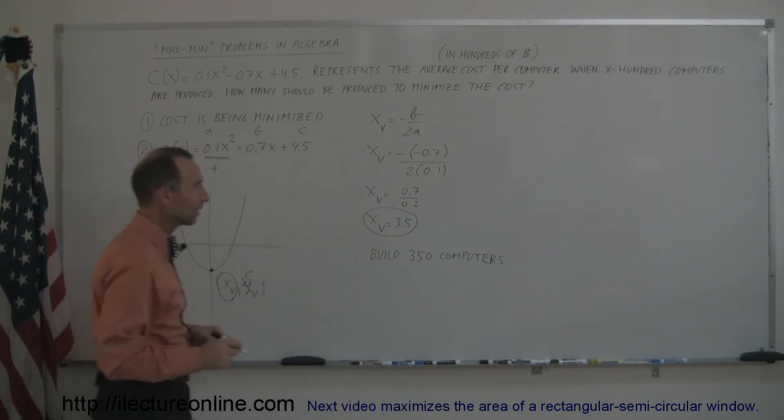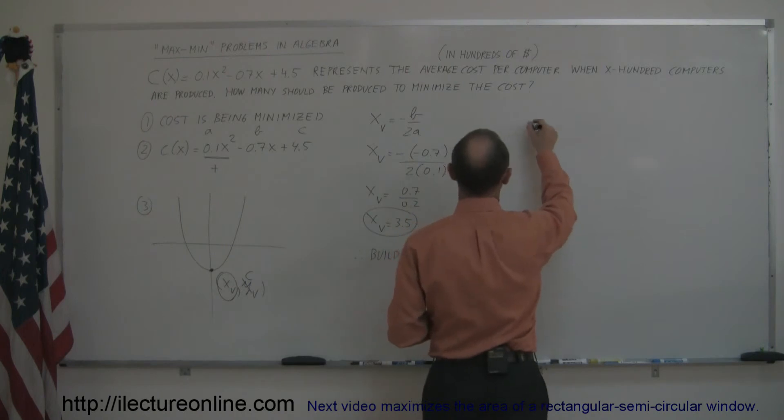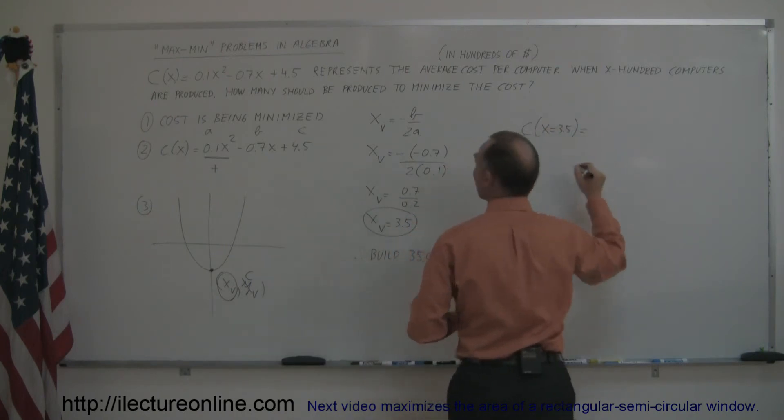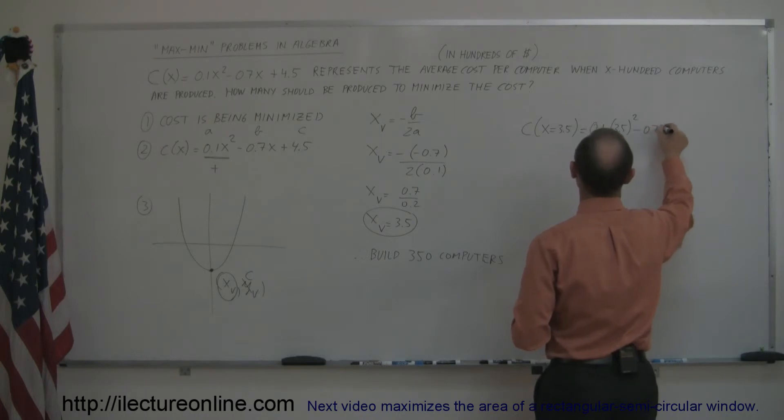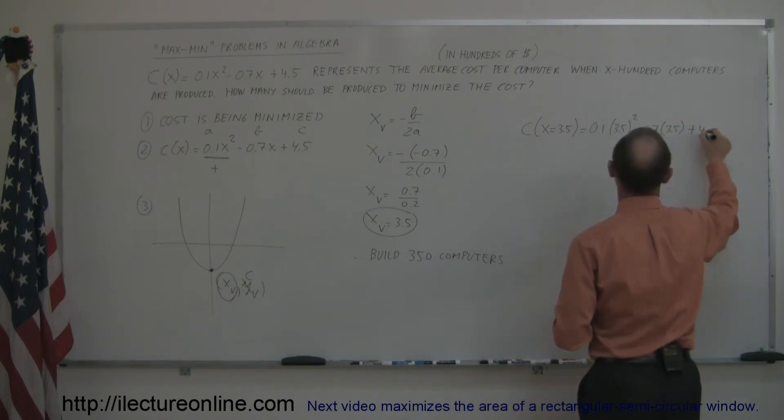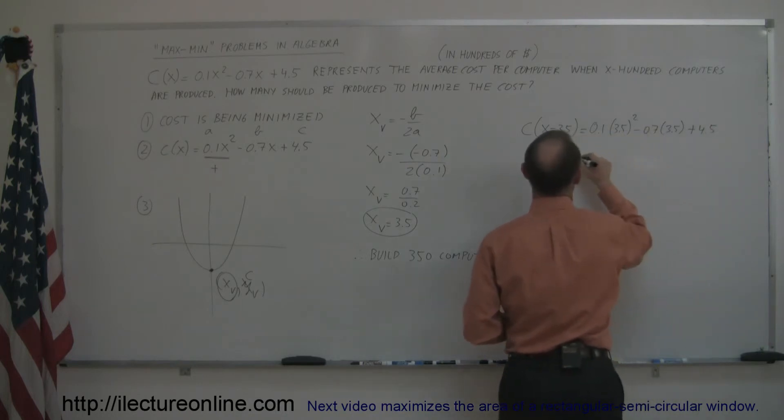Well, we can then plug in the value for x in the cost function, so c when x is equal to 3.5, is equal to 0.1 times 3.5 squared, minus 0.7 times 3.5, and then plus 4.5. Alright, let's work that out.